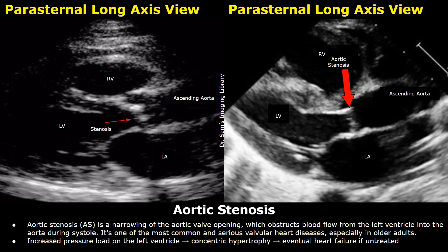The valve does not open properly when the heart contracts. This improper opening of the aortic valve leads to increased pressure in the left ventricle, which can lead to concentric hypertrophy if the stenosis is severe. In concentric hypertrophy, the heart muscle thickens. If the stenosis is left untreated, it can lead to heart failure.